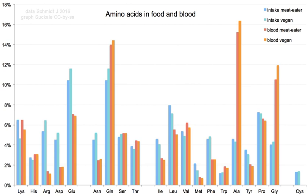Some peripheral membrane proteins have a patch of hydrophobic amino acids on their surface that locks onto the membrane. Proteins that have to bind to positively charged molecules have surfaces rich with negatively charged amino acids like glutamate and aspartate, while proteins binding to negatively charged molecules have surfaces rich with positively charged chains like lysine and arginine. There are different hydrophobicity scales of amino acid residues.